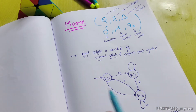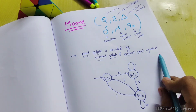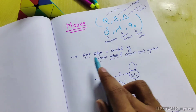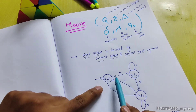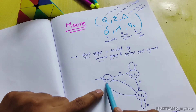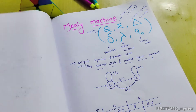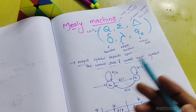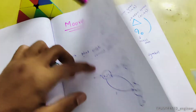So, what is the Moore Machine? The next state is decided by the current state and the current input symbol. Simply know this: the next state is decided by the current state and current input symbol. For example, Q0 and input 1 decide what the next state will be.